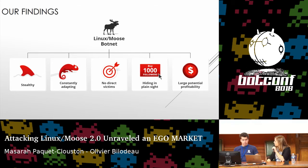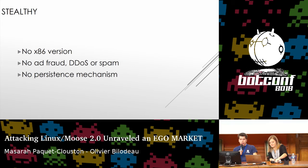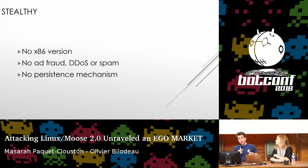I'm taking care of the first two characteristics. First: stealthy. We say it's stealthy mainly because they're really trying to avoid attention. One thing they do is they have no x86 version. I've been running collectors analyzing samples of embedded Linux systems for years — most threats have an x86 version, except Linux Moose. We think this is to avoid collection and to avoid honeypots deployed without thinking about architecture-specific features, making reverse engineering harder.